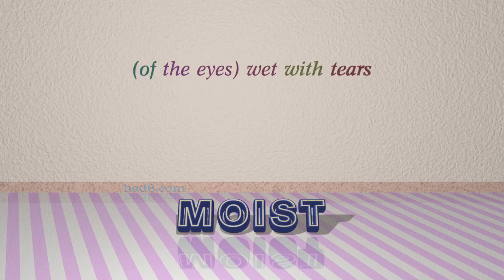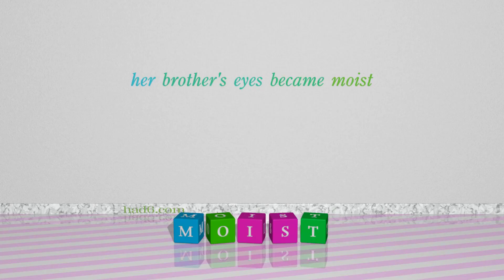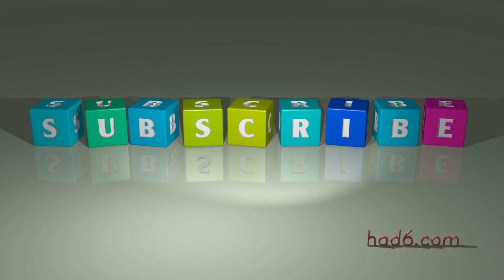Number five: moist, which means of the eyes wet with tears. For example: her brother's eyes became moist. If you liked the video please do not forget to hit the like button and subscribe for similar videos.